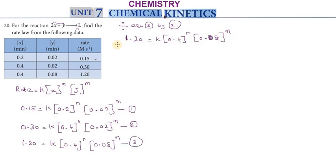The second equation is 0.30 equals k times 0.4 to the power n times 0.02 to the power m. When we divide, k cancels and the values simplify. 4 equals 0.02 divided by 0.08. Since 0.08 is 4 times 0.02, we get 4 equals 4 to the power m. Therefore, 4 to the power 1 equals 4 to the power m, so m equals 1.